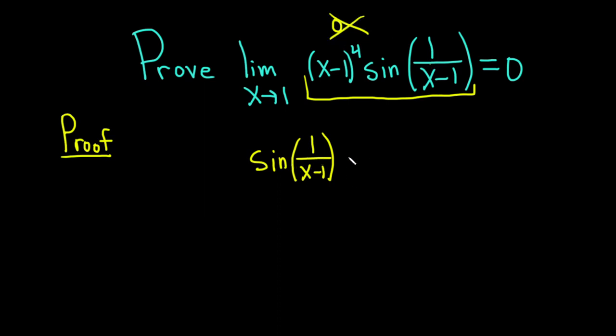The sine function is always between 1 and negative 1. So this is less than or equal to 1 and greater than or equal to negative 1. This is always true for the sine function. It's always going to be between these two numbers. So that's a good first step because that gives us an inequality.